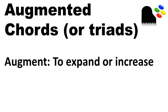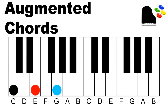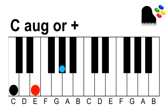We're going to start with augmented chords, or triads as I also refer to them — a triad being a three-note chord, so I'll use that term interchangeably. To augment means to expand or increase. To create an augmented chord, you take the top note of a chord when it's in root position and move it up a half step — to the very next key. The chord extension for an augmented chord is going to be AUG, or a plus sign.